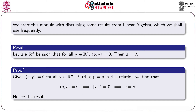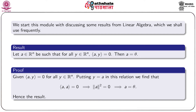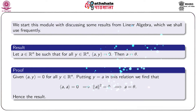We start this module by discussing certain results from linear algebra which we shall frequently use. First result: let a be a vector in Rⁿ such that for every choice of y in Rⁿ, the inner product of a and y is 0. Our claim is that a is nothing but the zero vector. Given for every y in Rⁿ the inner product ⟨a, y⟩ = 0, in particular let y = a, so ⟨a, a⟩ = 0, which means ‖a‖² = 0, that is ‖a‖ = 0. We know for any vector, norm is 0 if and only if it is the zero vector. So a is the zero vector.